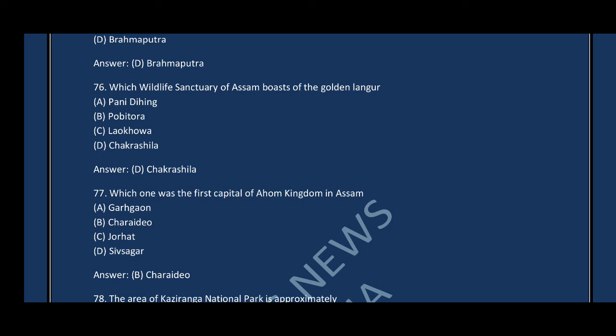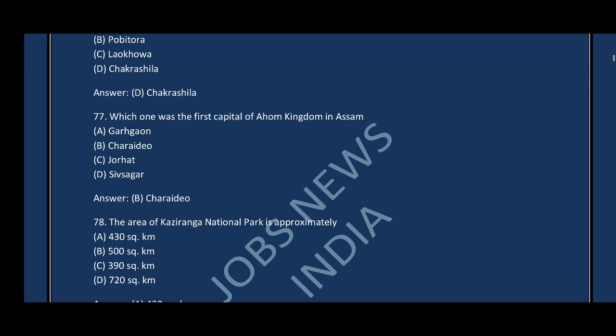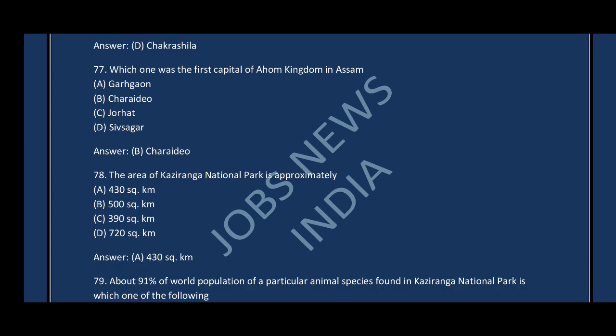Question number seventy-seven: Which is the first capital of the Ahom Kingdom in Assam? The correct answer is option B — Charaideo. Note: The last capital was Jorhat; the first capital was Charaideo. Question number seventy-eight: The area of Kaziranga National Park is approximately — the correct answer is option A, 430 square kilometres.